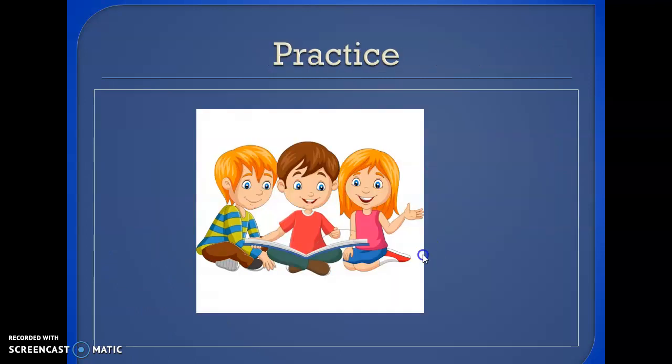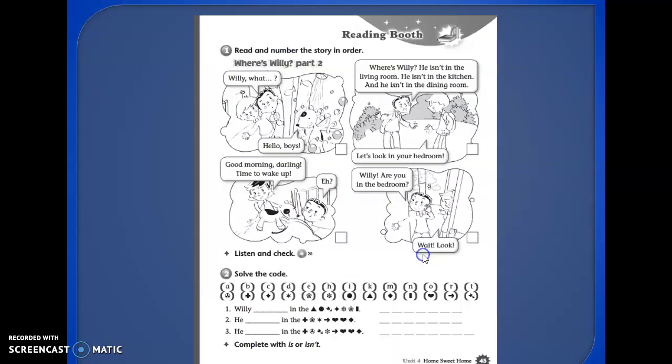Excellent. Let's see with the practice reading booth. Read and number the story in order. Where is Willie, part 2? You're going to read and write the correct number in order. Okay, number two, solve the code. Willie is in there now, is right, isn't Willie.